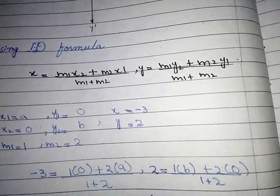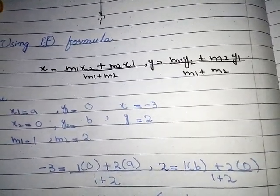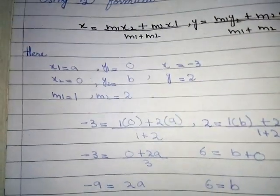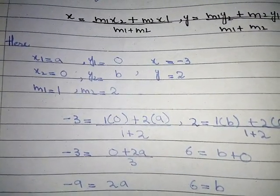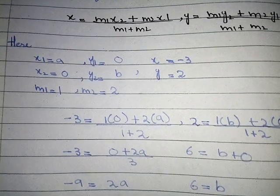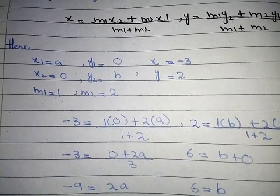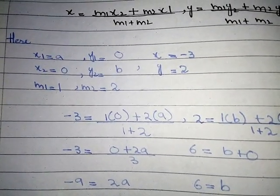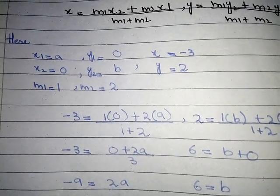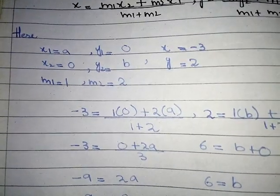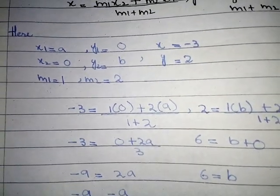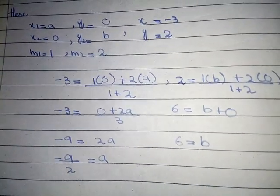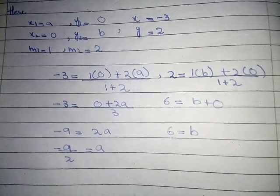And y = (M1·y2 + M2·y1) / (M1 + M2). Here, x1 = a, y1 = 0, x2 = 0, y2 = b, and the point dividing is x = -3, y = 2, with M1 = 1 and M2 = 2.